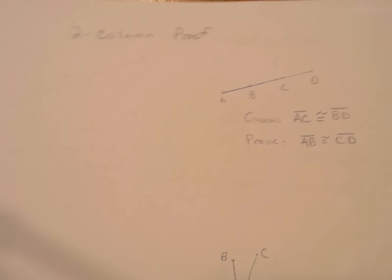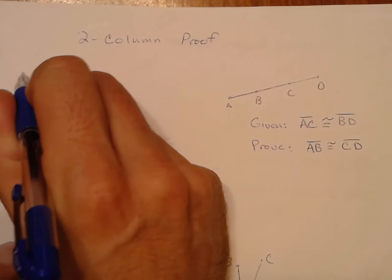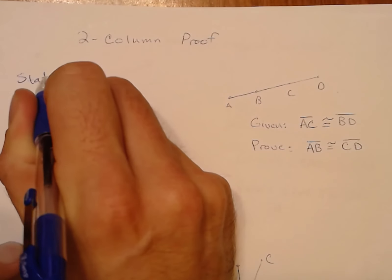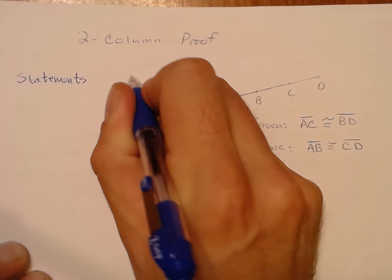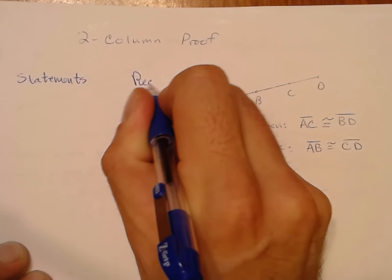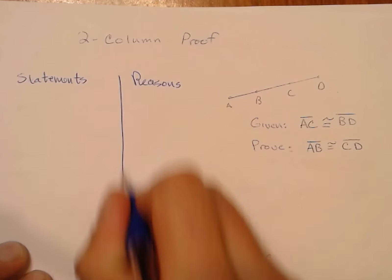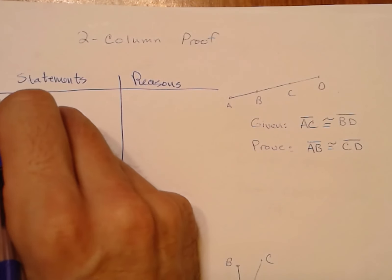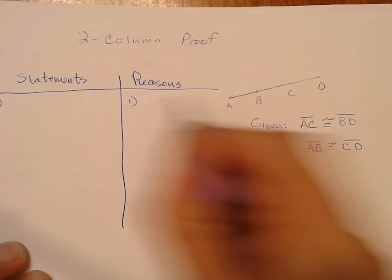Let's take a look at solving these two-column proofs. We'll start off by formatting. We have our statements and reasons — two columns. Please make sure you are formatting correctly with corresponding numbers.